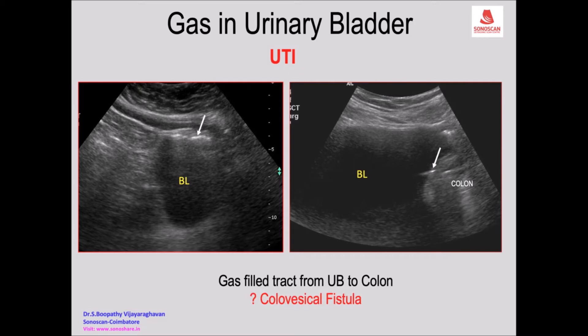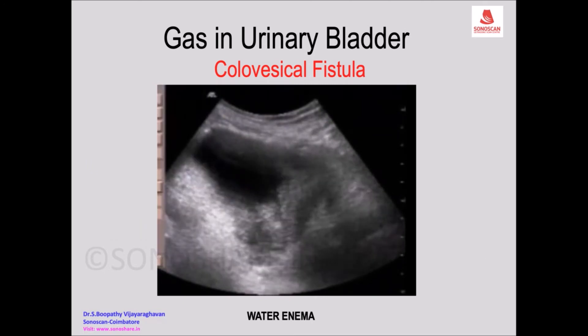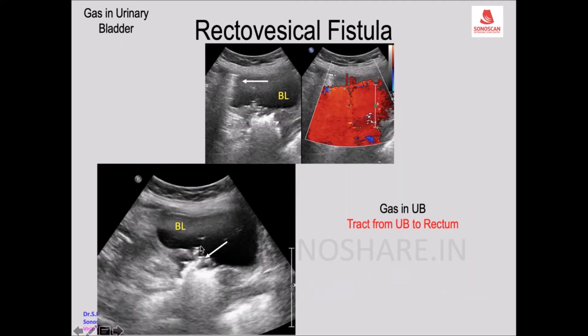You suspect colovesical fistula but you are not seeing the tract confirming it. Now we have diagnosed gas in the urinary bladder with a colon that is not thick-walled, but you see uninflamed diverticula here and there. This is an inflamed diverticulum in the proximal colon with a colovesical tract.